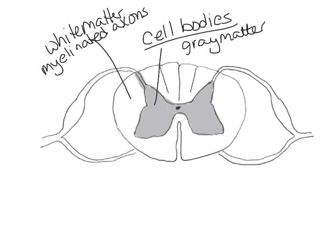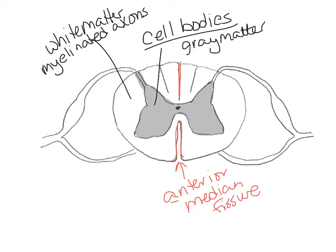The spinal cord looks like it's almost separated in half. We see a gap on the anterior side of the spinal cord, and we call that the anterior median fissure - you can remember that ants can crawl into that space, so it's anterior. The little slit on the back side that's not very wide is called the posterior median sulcus.